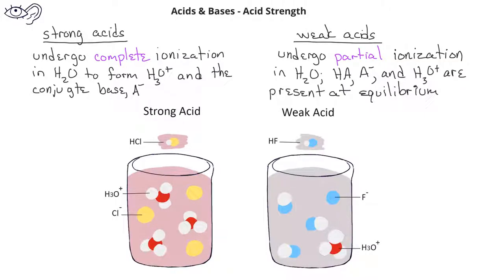These figures show the difference between a strong acid and a weak acid. In the figure on the left, we have hydrochloric acid dissolved in water. When hydrochloric acid dissolves in water, it forms hydronium ions and chloride ions, and all of the HCl has ionized or dissociated into hydronium ions and chloride ions. On the other hand, the beaker on the right shows a solution of hydrofluoric acid, where we still have some hydrogen fluoride molecules combined together, although we also have some hydronium and fluoride ions separated from each other.